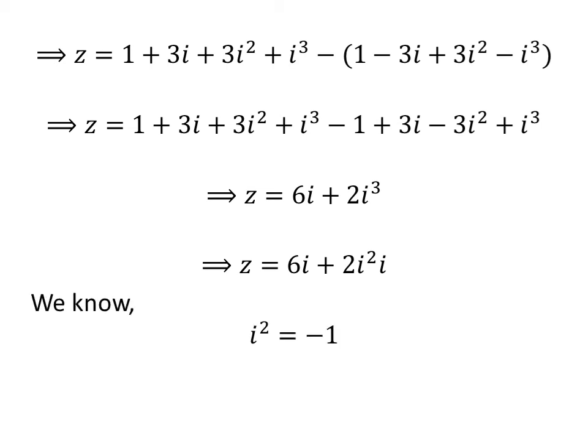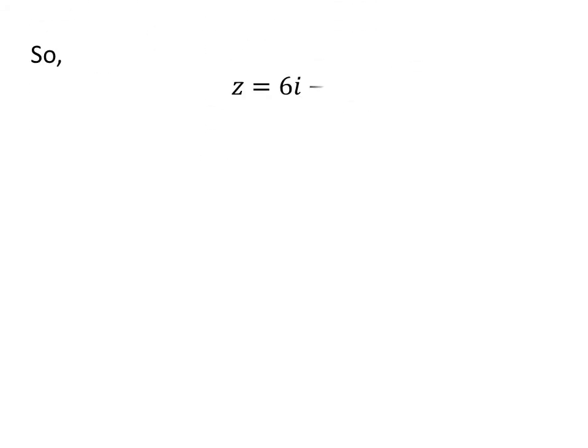We know the square of the imaginary unit i is minus 1. Applying this property gives us Z is equal to 6 times i minus 2 times i. Further simplification gives us Z is equal to 4i.